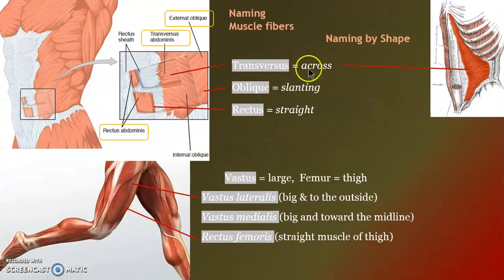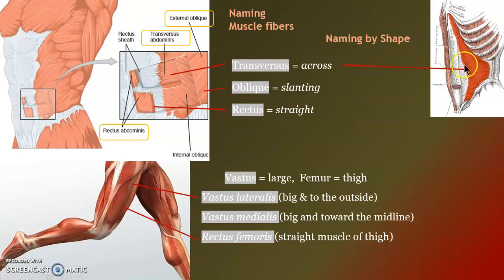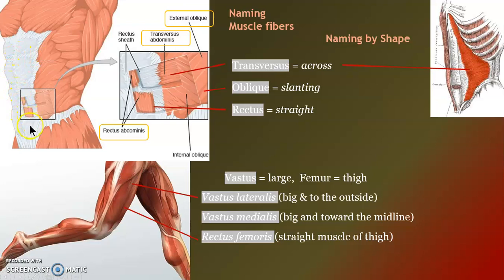Muscle names seem overwhelming, but let's make some sense out of them by shape. Transversus means across, oblique means slanting, rectus means straight. In the abs: transversus abdominis — these muscles go straight across, and we don't see them because they're deep. Obliques come down at a slant.